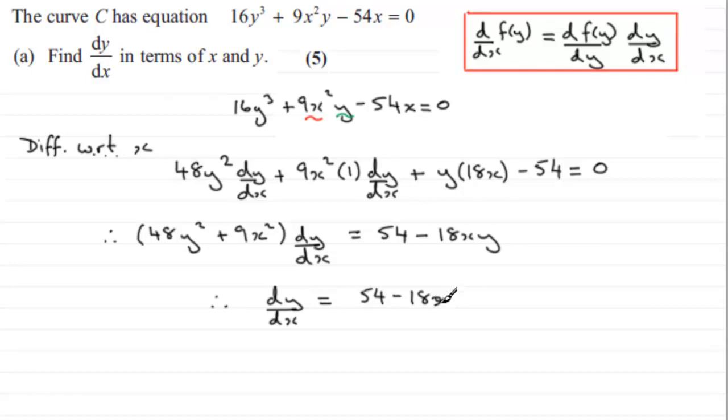So therefore we've got dy/dx equals now that will be 54 then minus 18xy, all over 48y² + 9x². And that's acceptable as an answer.